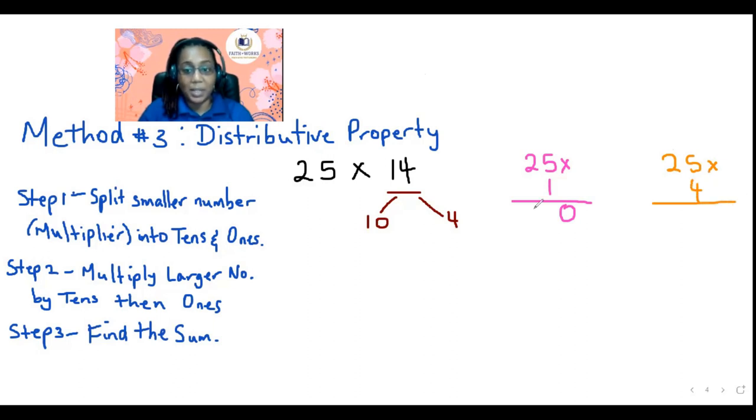So let's solve for 25 by 10. So 5 ones are 5, 1 by 2 is 2. Let's solve for the 25 by 4. The 5 fours are 20. Cross the 0. Carry the 2. 4 twos are 8 plus 2 is 10. And then we find the sum. So the sum would be 250 plus 100. Let's put our total lines. And let's add them together and see if we get 350. So 0 plus 0 is 0, 5 plus 0 is 5, and 2 plus 1 is 3. Yay! We did it again. So we got 350 three times.